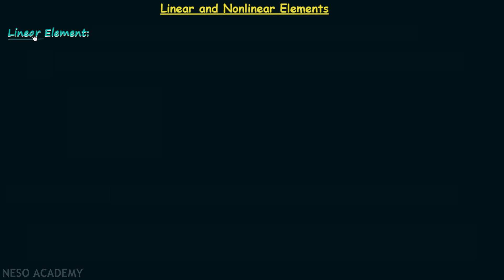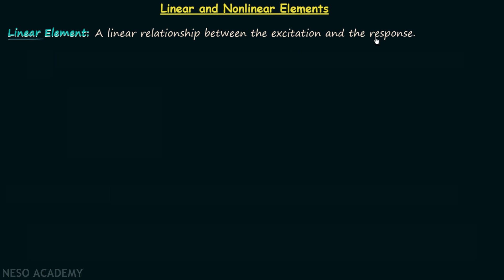An element is said to be linear when there is a linear relationship between the excitation and the response. There must be a linear relationship between the excitation, which is the input — it can be voltage or current — and the response, which is the output, which can also be voltage or current. Linear relationship means on increasing or decreasing the excitation, the response increases and decreases linearly.